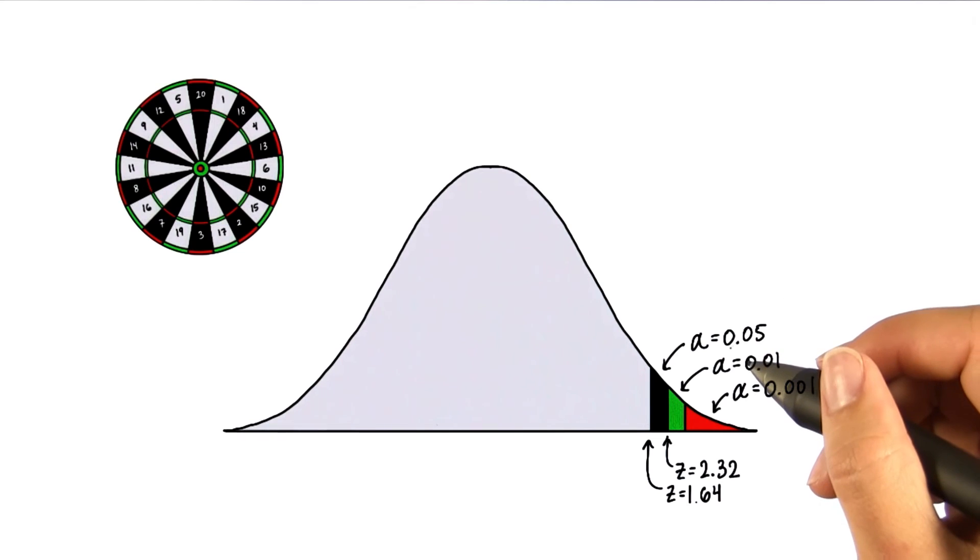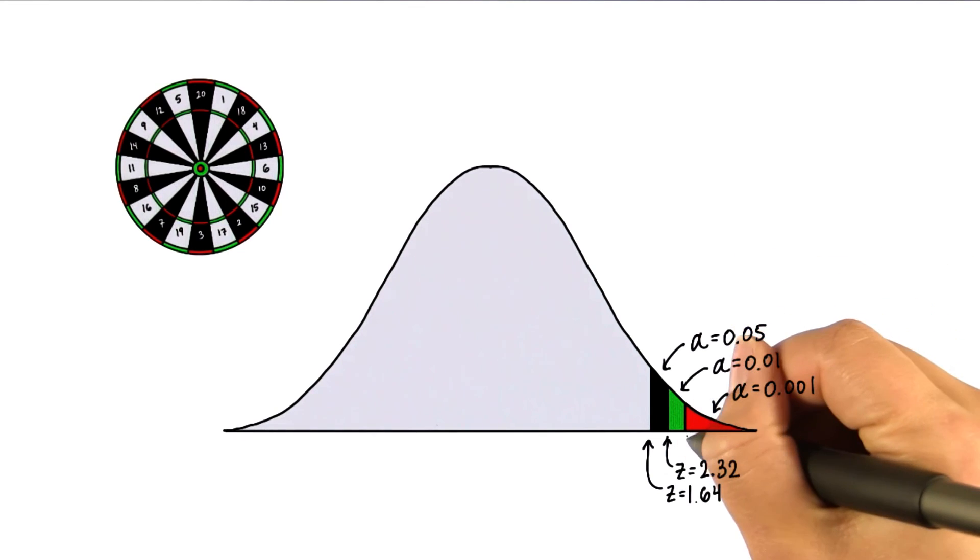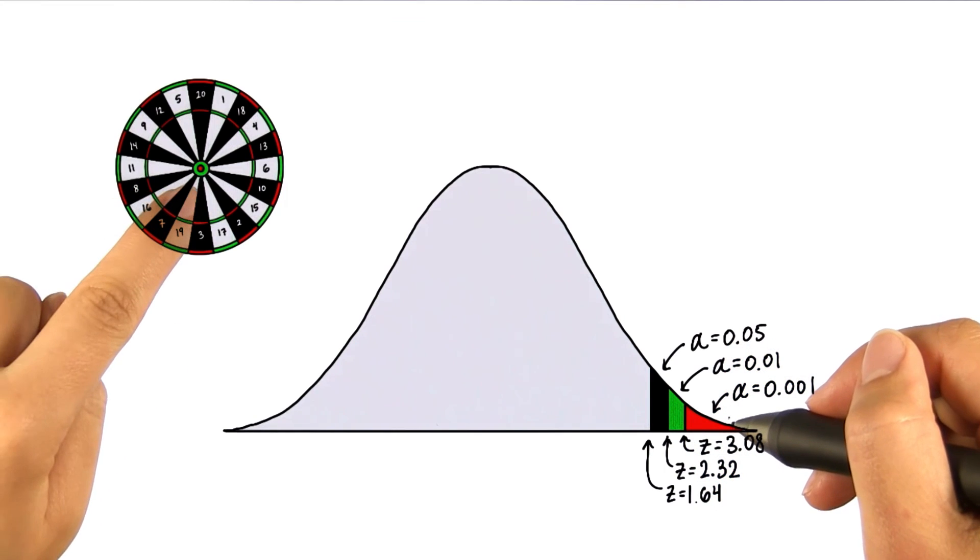And it's super unlikely to have occurred by chance if the mean lands beyond z equals 3.08. This is like striking the bullseye.